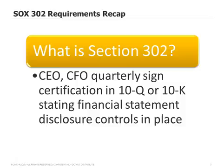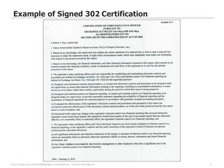What is Section 302 of SOX? One requirement is for the CEO and CFO to evaluate the design and operating effectiveness of disclosure controls over financial reporting. This is done on a quarterly basis. The disclosure controls include internal controls over financial statements. Once they've assessed the disclosure controls and found that they operate effectively, they have to sign a certification letter in the 10-Q or the 10-K. This happens like clockwork every quarter and every year end. Here's an example of a certification from the CEO, which is available to the public.